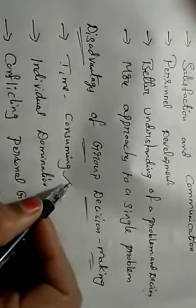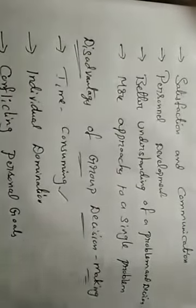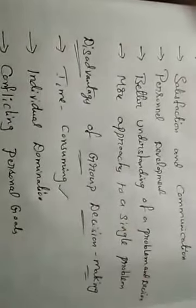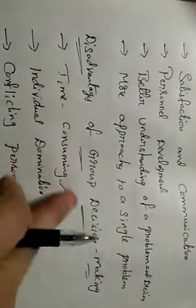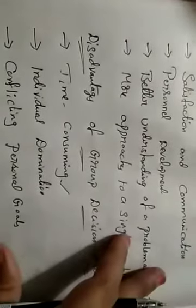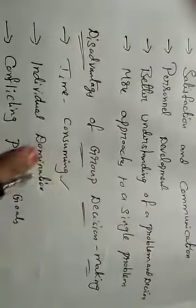These are the advantages. Now coming to the disadvantages of group decision making. The first disadvantage is time consuming — since each and every member is involved, arranging meetings and participation takes time. Members go through different suggestions, then go for solutions, so it takes a little time. But whatever may be, group decision making is a better one.